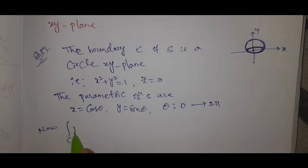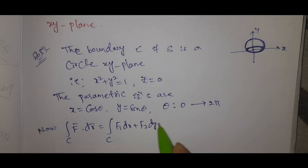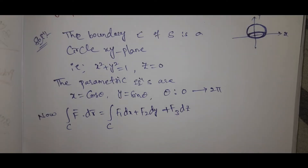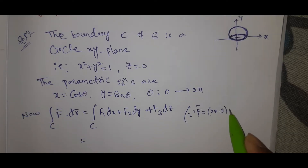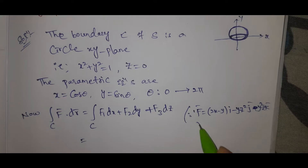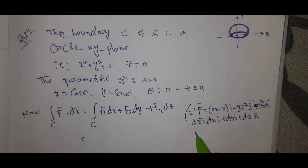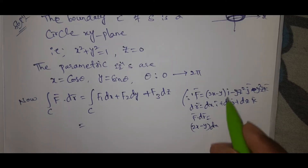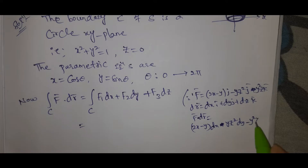Now, ∫C F̄·dr̄ = ∫C (f1 dx + f2 dy + f3 dz). Here F̄ = (2x - y)ī - yz²j̄ - y²zk̄, and dr̄ = dx ī + dy j̄ + dz k̄. So F̄·dr̄ = (2x - y)dx - yz² dy - y²z dz.